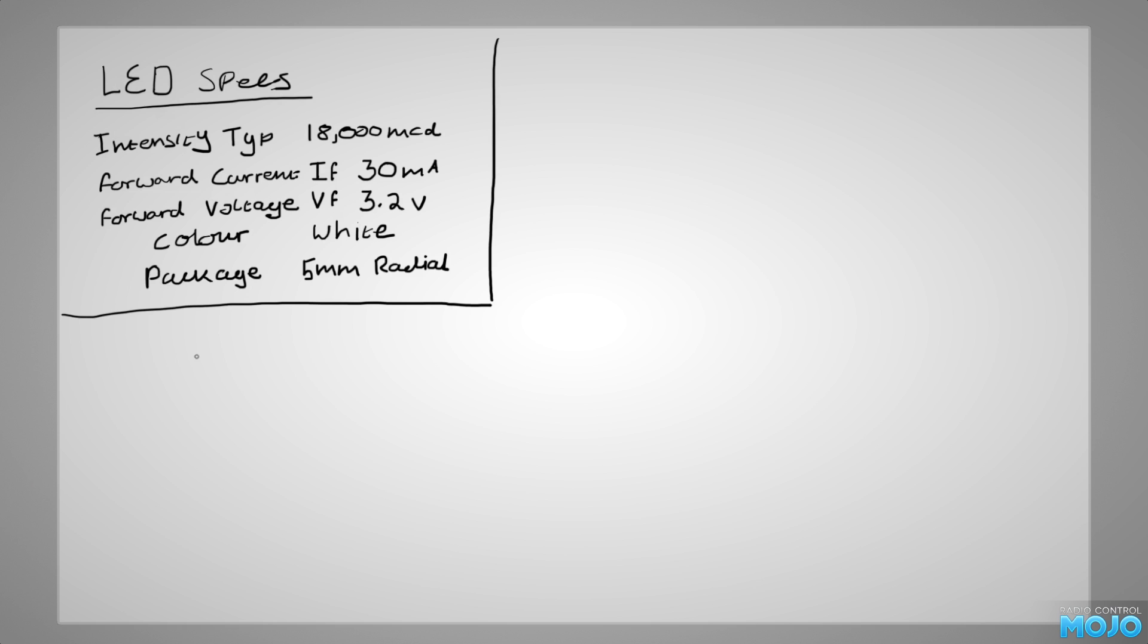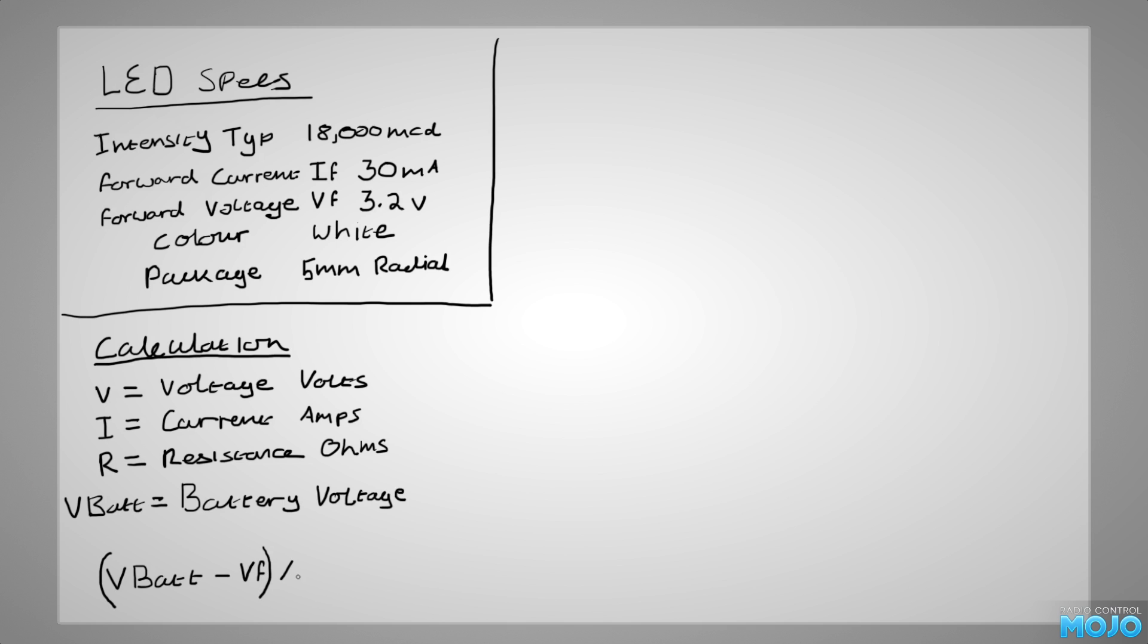The next bit is where most people get a bit confused, but it's not too bad, honestly. First, we have the ohms law bit. Voltage, volts. Current, amps. Resistance, ohms. And in this case, VBAT, which is the battery or supply voltage. The calculation is very simple. VBAT minus forward voltage divided by the forward current equals resistance. Simple.